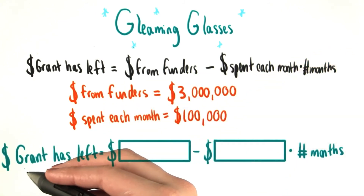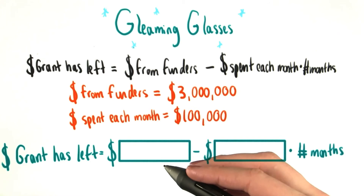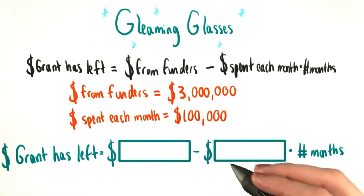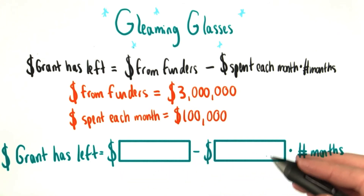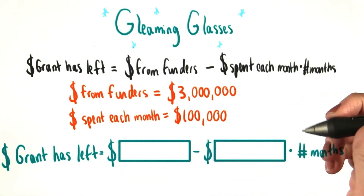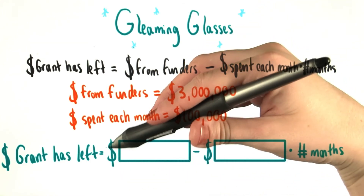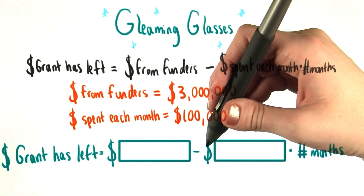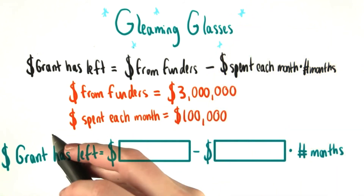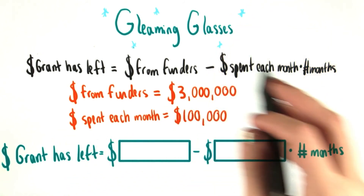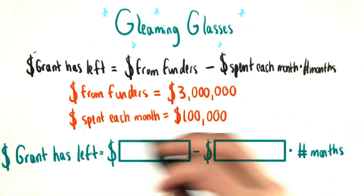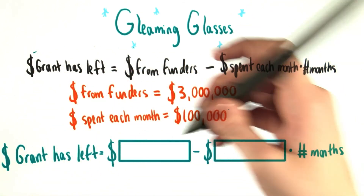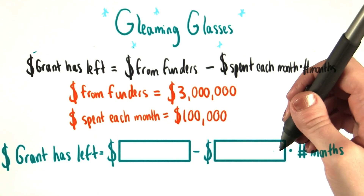So down here, I'd like you to fill in which numbers belong in these two spaces that I've given you. You don't need to write dollar signs because I already filled them in for you. We're just taking all of this information up at the top and combining it into one equation.